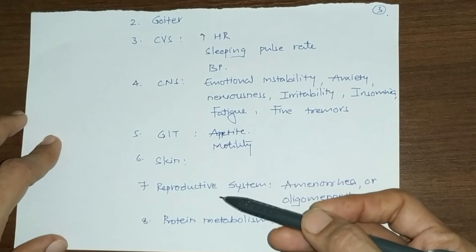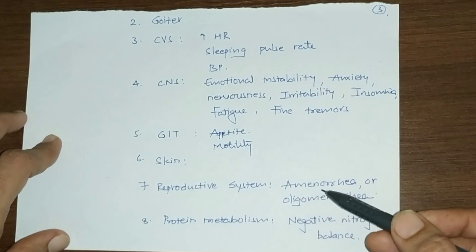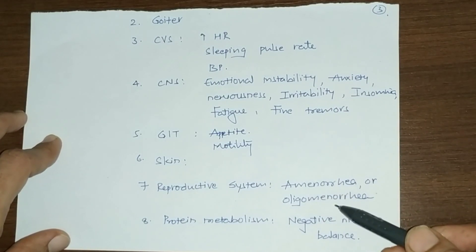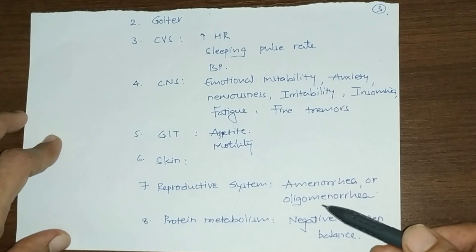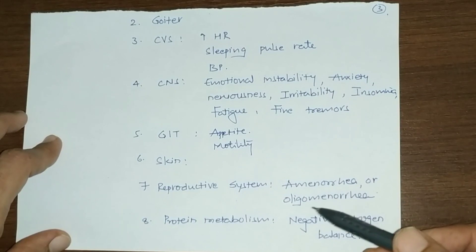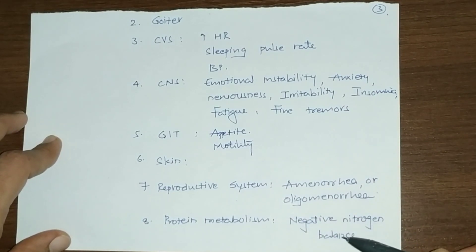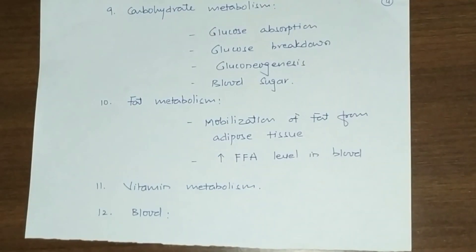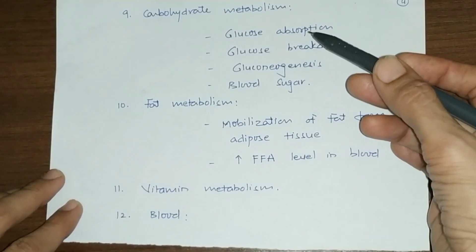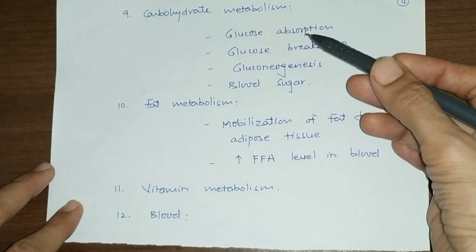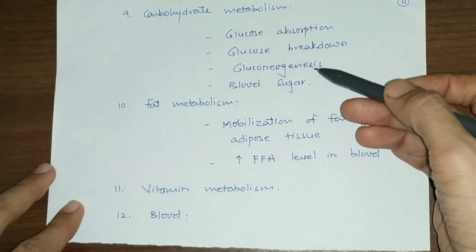In the reproductive system, hyperthyroidism causes amenorrhea (absence of menstruation) or oligomenorrhea (decreased menstruation), as well as abortion and infertility in females. Regarding protein metabolism, there is a negative nitrogen balance due to excessive metabolism.